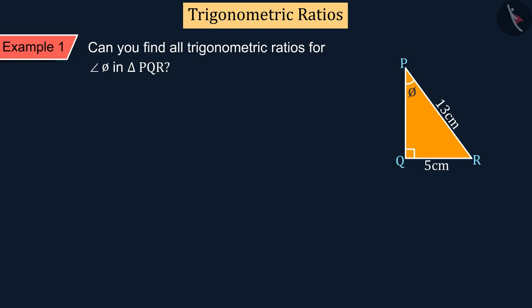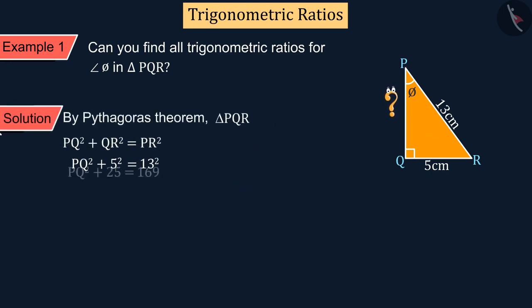We know that to find all trigonometric ratios, we need to know the three sides of a triangle. Can you tell the measurement of the third side of this triangle? Perfect. For this, we can use Pythagoras theorem.